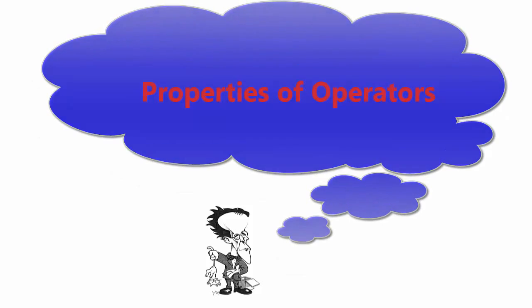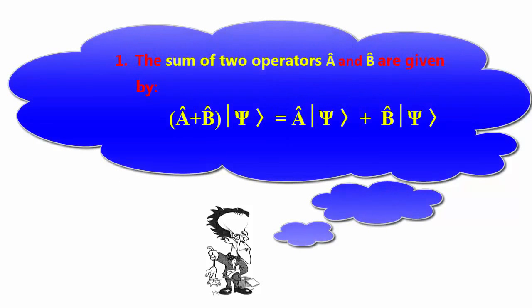Properties of operators: 1. The sum of two operators A and B are given by (A + B)|ψ⟩ = A|ψ⟩ + B|ψ⟩.